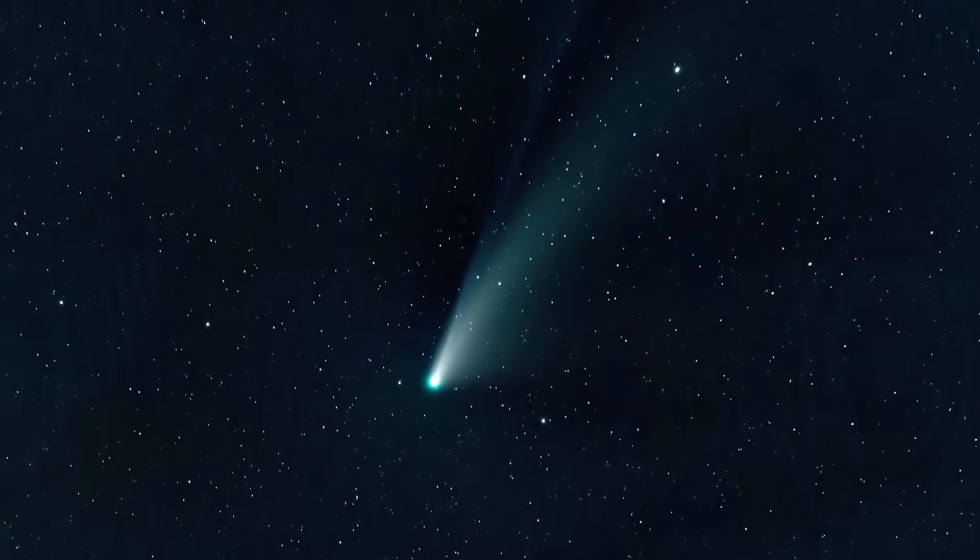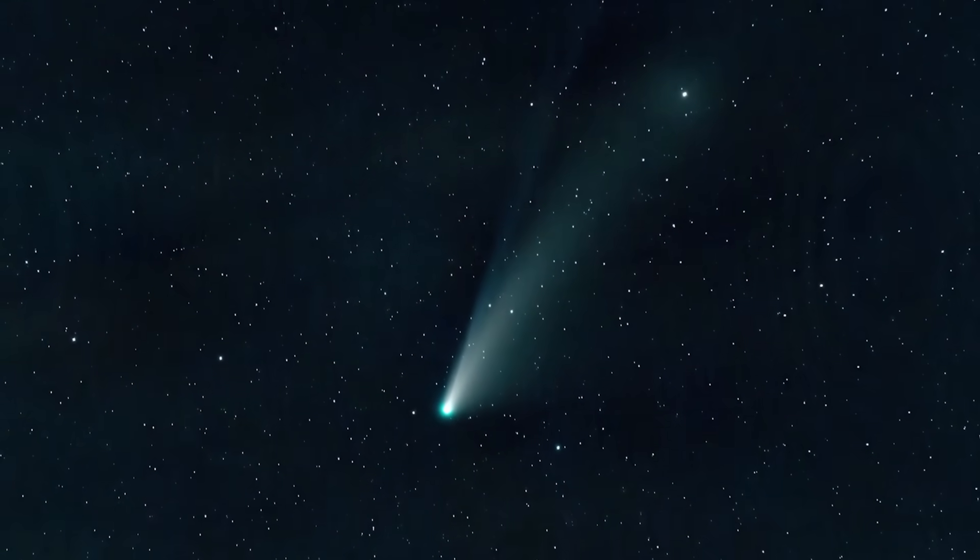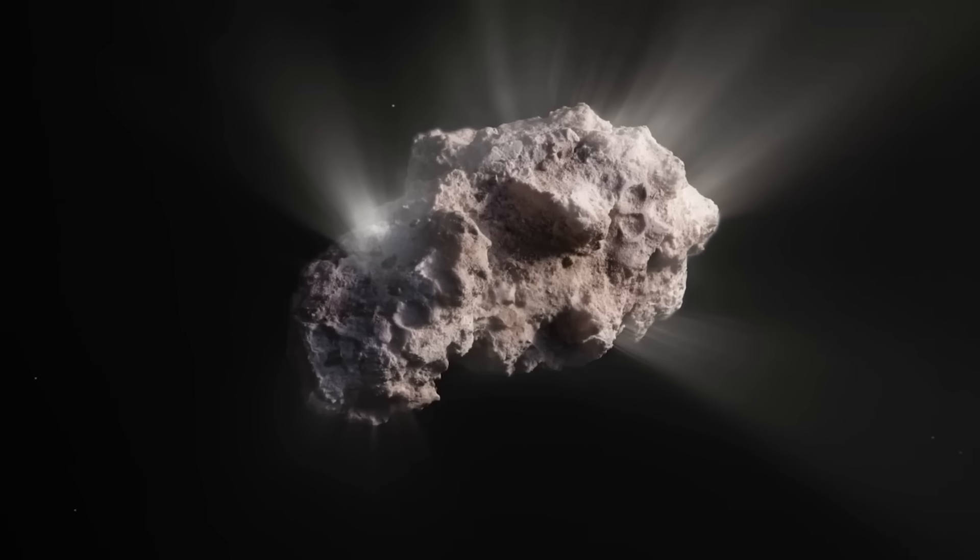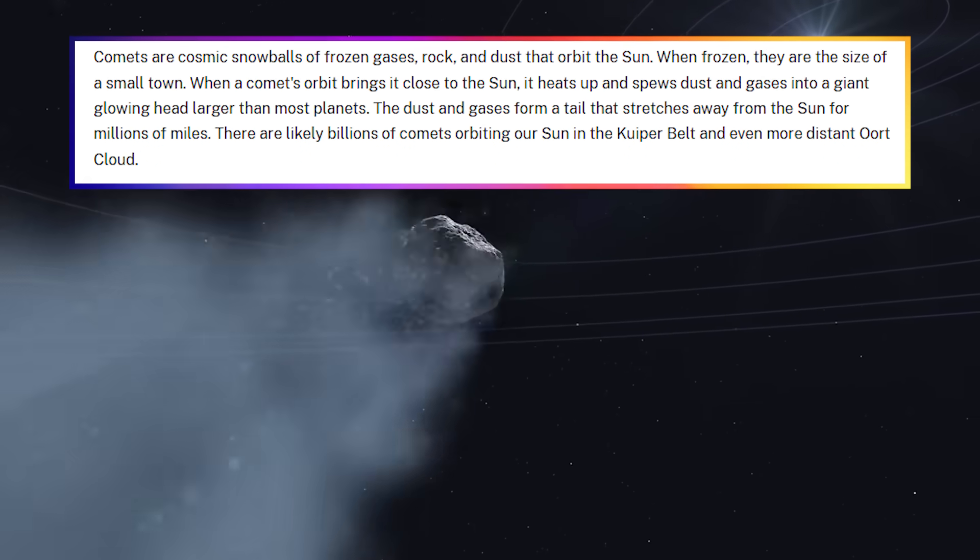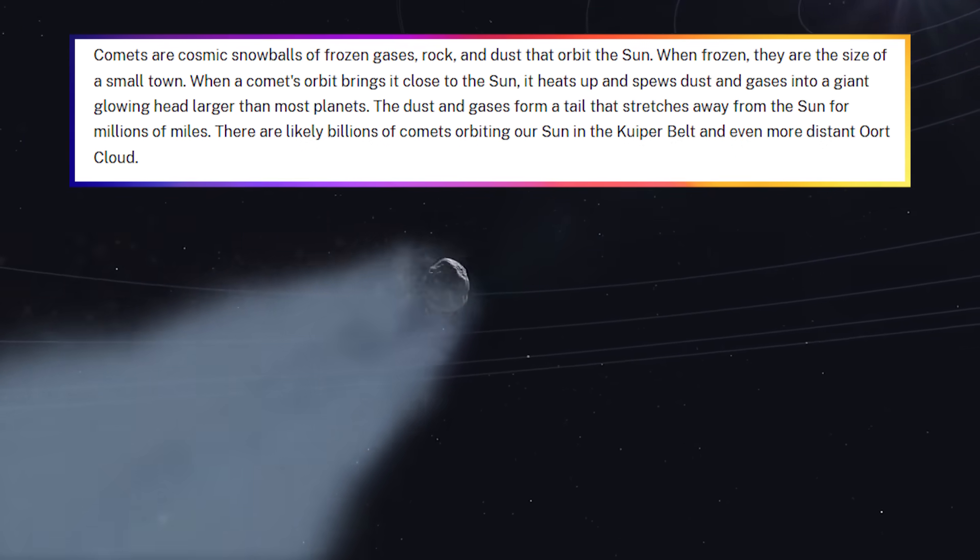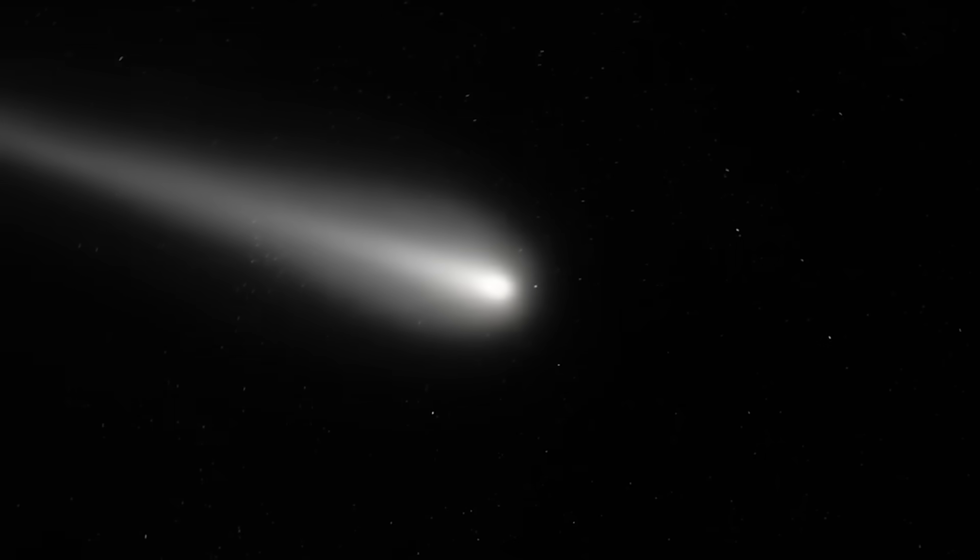For years, we've been told that comets are harmless wanderers, leftovers from the birth of our solar system. They're supposed to be predictable. They get closer to the sun, they heat up, they release gas and dust, creating a beautiful tail. That's the end of the story. But 3-Eye Atlas has torn up that script.